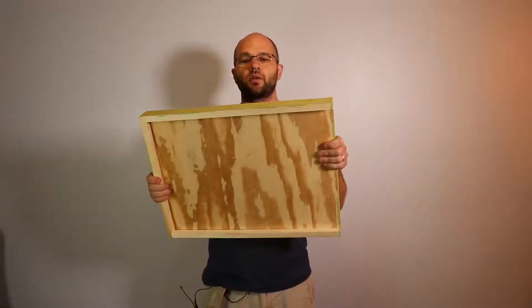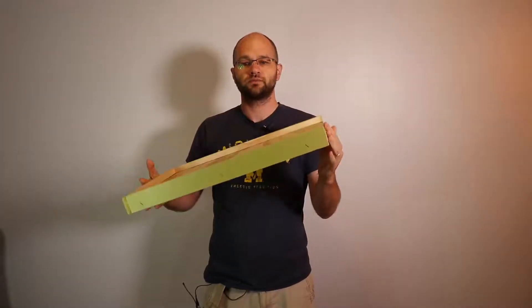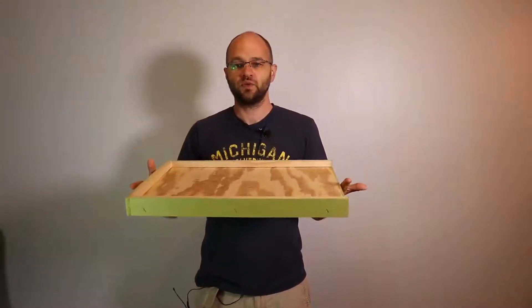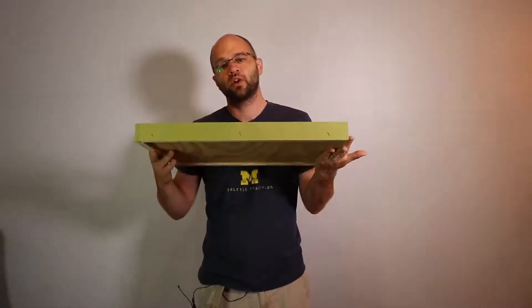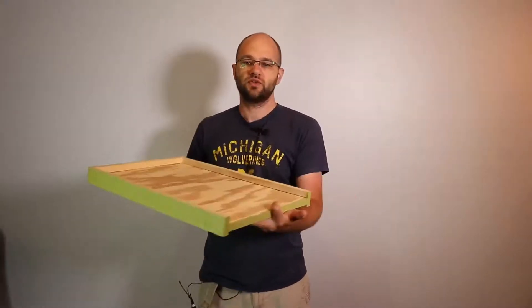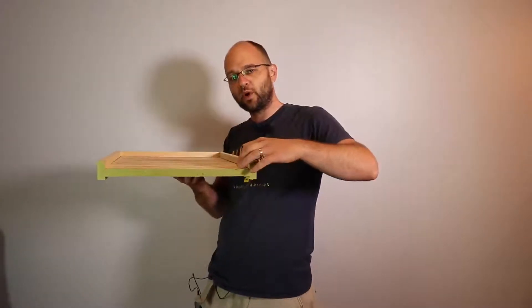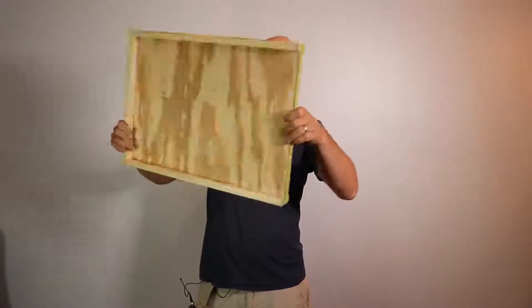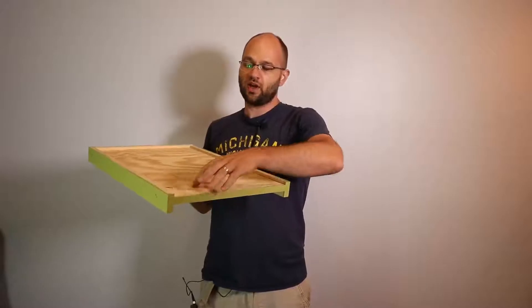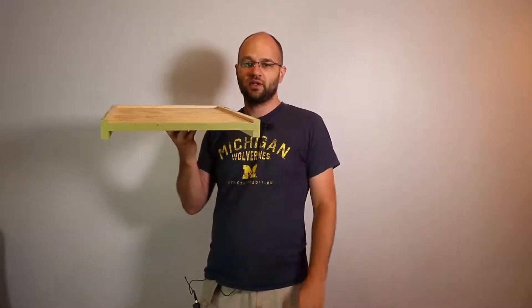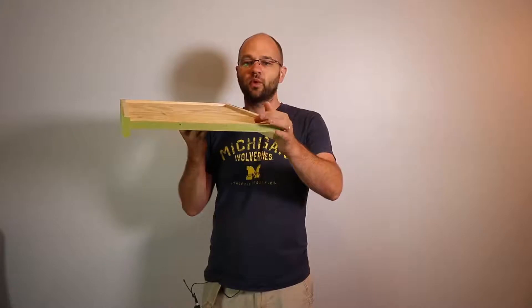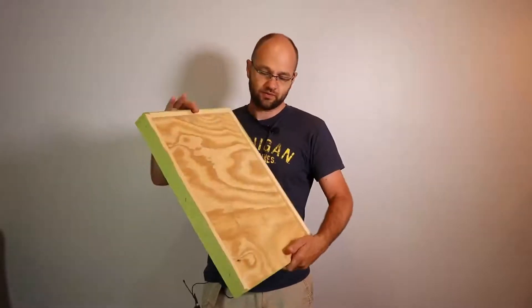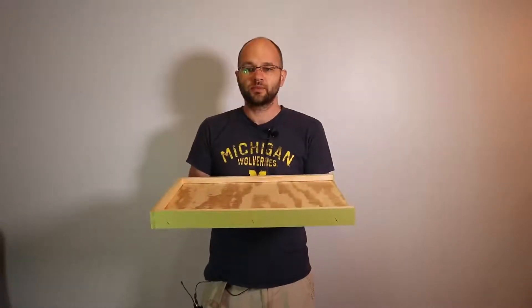Now, pros of the solid bottom board. They cost less. It's simpler to use. You have one bottom board throughout the year. You can use an entrance reducer on them if you want. Or if you wanted, you can just flip them over and you have a little smaller entrance for smaller colonies or for winter months.